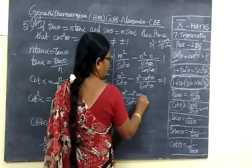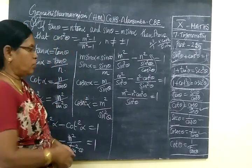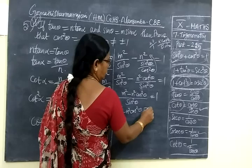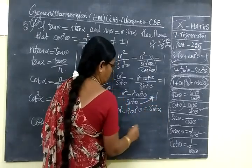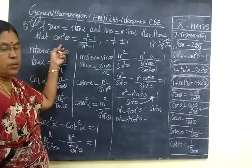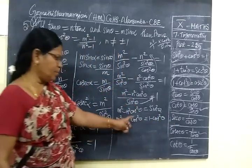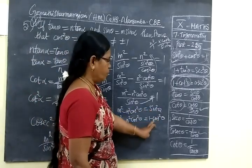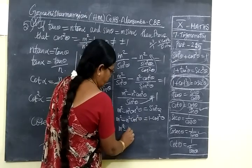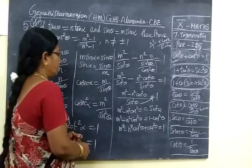So n² minus n² cos²θ equals 1. Now replace sin²θ with 1 minus cos²θ. So n² minus n² cos²θ plus cos²θ equals 1, giving us cos²θ(1 - n²) plus n² equals 1. Taking cos²θ common: cos²θ times (1 - n²) equals 1 minus n².